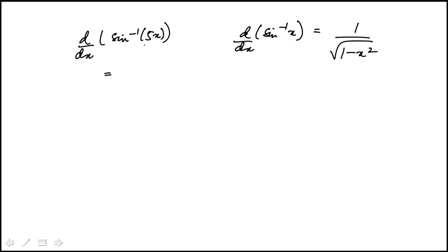We have a 5 here, so this is going to be 5 over square root of 1 minus (5x) squared. That's one way to do it, and that simplifies to 5 over square root of 1 minus 25x squared, which is choice d.